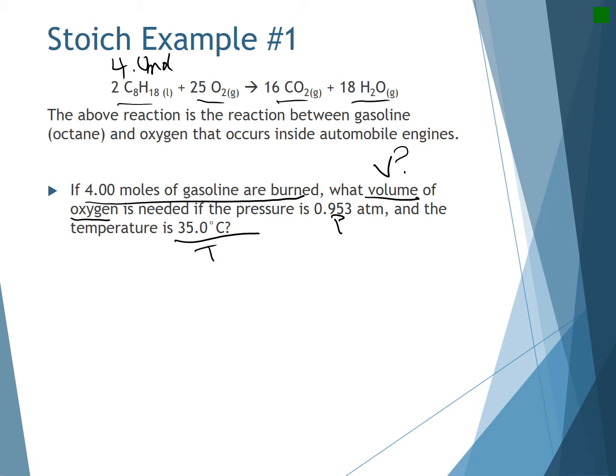With stoic problems, you are either going to need to find moles initially using PV equals NRT or the ideal gas law, or you're going to have to do stoic and then use the ideal gas law. In this case, I am given four moles of this guy. So what I need to first do is convert moles into moles of the other substance. That's where the stoichiometry comes, is when we're going from moles of one substance to moles of another. Since I'm starting with knowing the moles of gasoline, I can figure out how many moles of oxygen I will need to react.